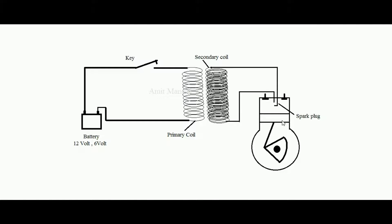When the compression ends, a spark is introduced by the help of a spark plug, which ignites the charge. The ignition of the charge develops work done over the piston, so the next stroke is the working stroke, and then there is the exhaust stroke by opening of the exhaust valve.